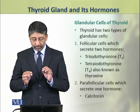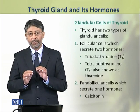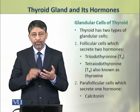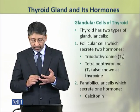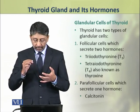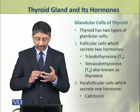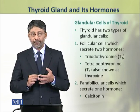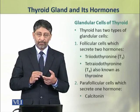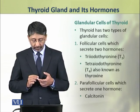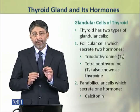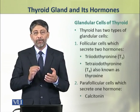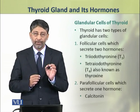There are two types of glandular cells in a thyroid gland. These are follicular cells which secrete two hormones: thyroxine which is also known as T4, and triiodothyronine i.e. T3. The second type of cells are parafollicular cells which produce one hormone called calcitonin.